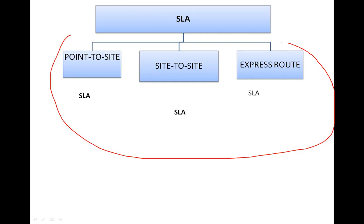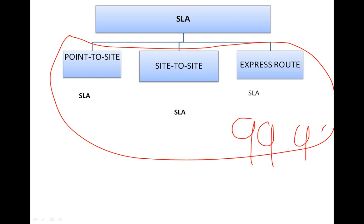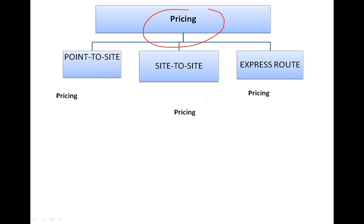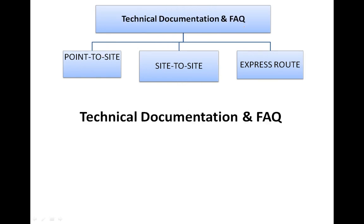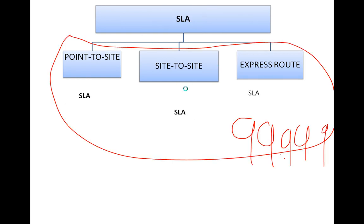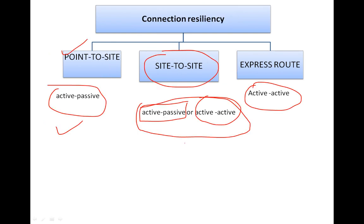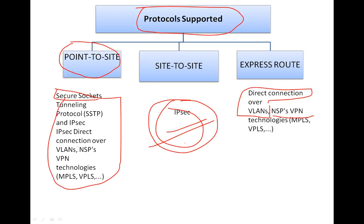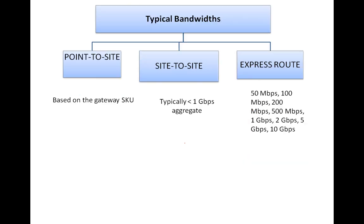All three — Point-to-Site, Site-to-Site, and ExpressRoute — have an SLA. Azure provides a 99.9% (three nines) service level agreement. For pricing, you have to pay for all three options. All three also provide technical documentation, and you can ask questions and get answers. These are the basic differences in usage, protocols, pricing, SLA, routing, bandwidth, and services.